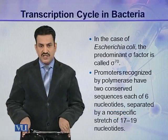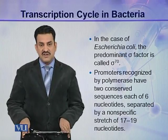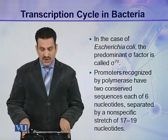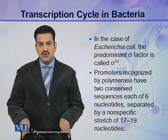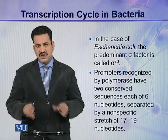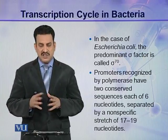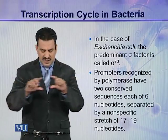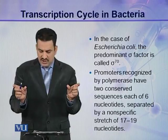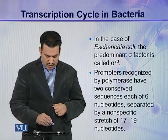In the case of Escherichia coli, the predominant sigma factor is called sigma 70. Promoters recognized by this polymerase have two conserved sequences, each of six nucleotides, and these are separated by a non-specific stretch of 17 to 19 nucleotides.